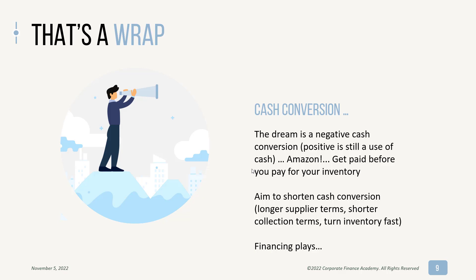So that's a wrap. Overall, the dream here is a negative cash conversion cycle. No matter how low your positive number is — even if you're down to single digits, like eight days — you're still using cash. Companies like Amazon sometimes have negative cash conversion cycles, meaning they're getting paid before they pay for the inventory. That's the dream. But in the meantime, aim to shorten your cash conversion: look for longer supplier terms, shorter collection terms from customers, maybe turn credit off and go cash in advance, turn your inventory fast. You can also look at financing plays where you get cash for your receivables, though these can be complex.